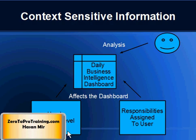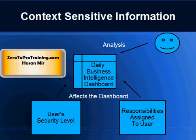When a user signs into Daily Business Intelligence, the information displayed on a dashboard changes depending on the responsibilities assigned to that user and also on the user's Oracle Applications security level. That way, each manager only views the information relevant to their management area. For example, a commodity manager can only view the commodities they have access to in Oracle Purchasing. An inventory manager can only view the warehouses they have access to in Oracle Inventory. A manager can only view the employees that report to them as per the supervisor hierarchy information stored in Oracle Human Resources.